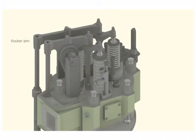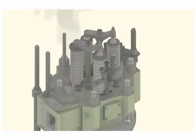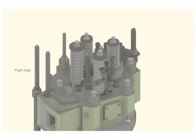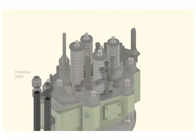Remove the rocker arm holder. Take out the valve yorks, push rods, and the protective tubes.